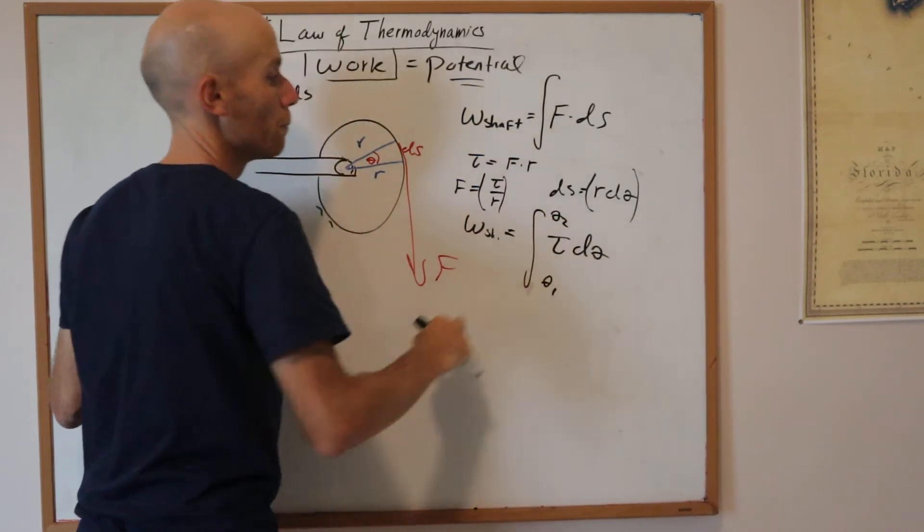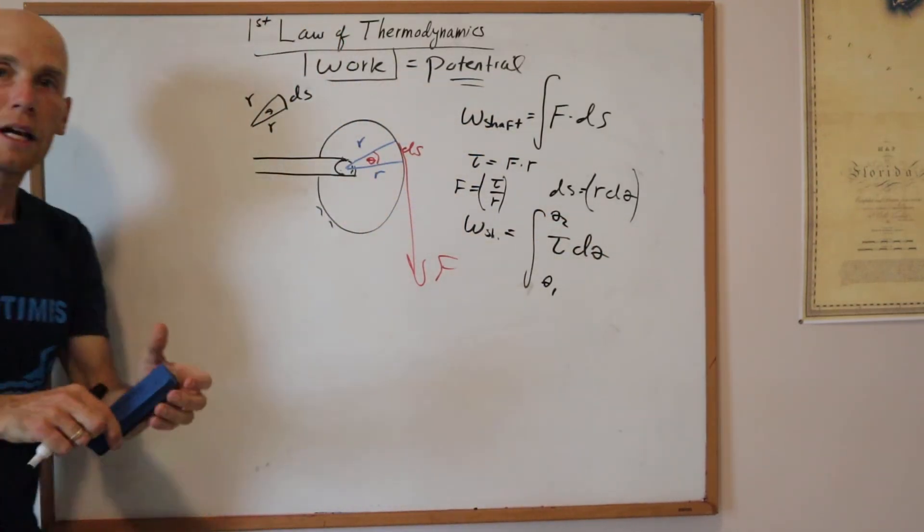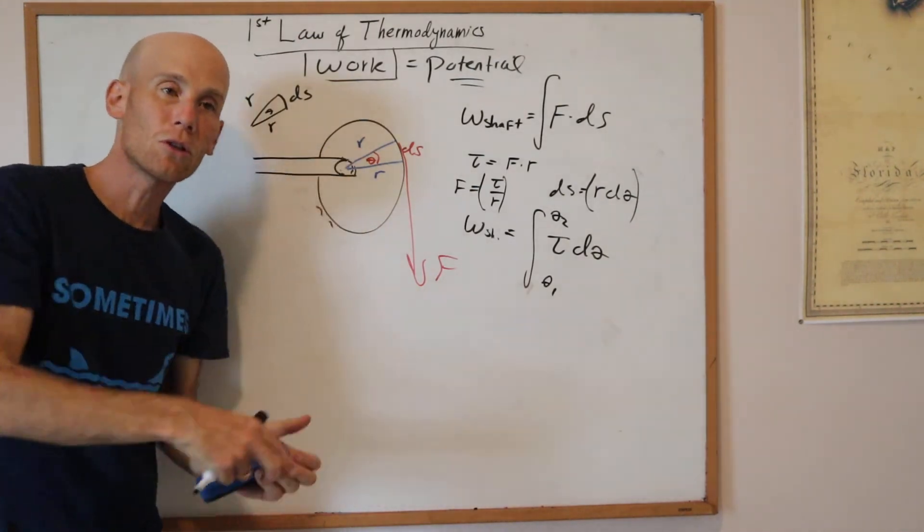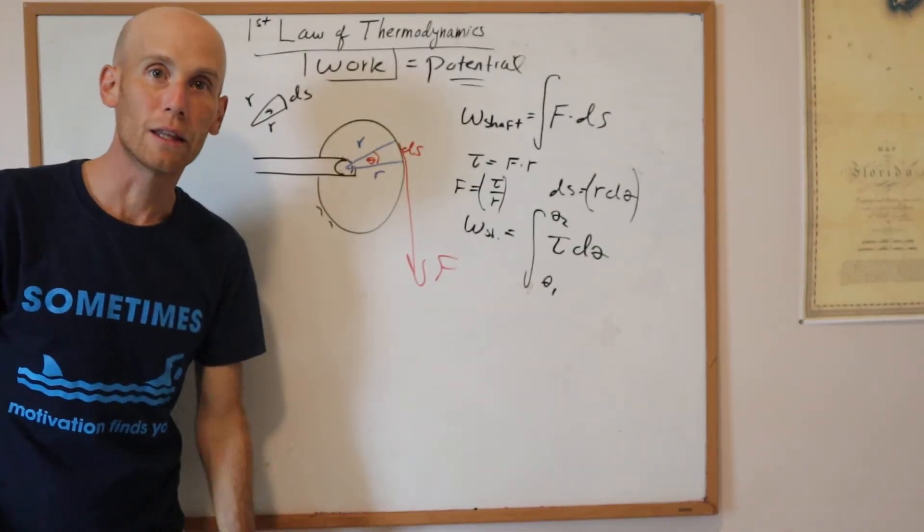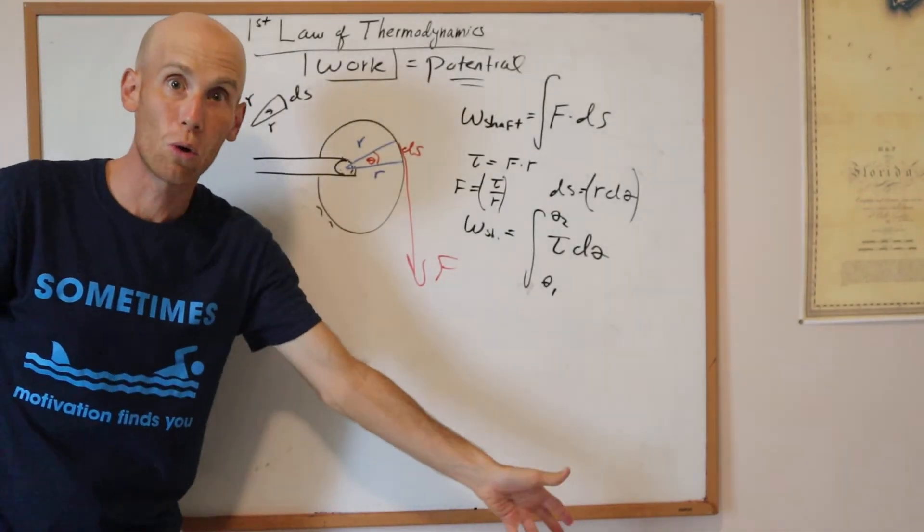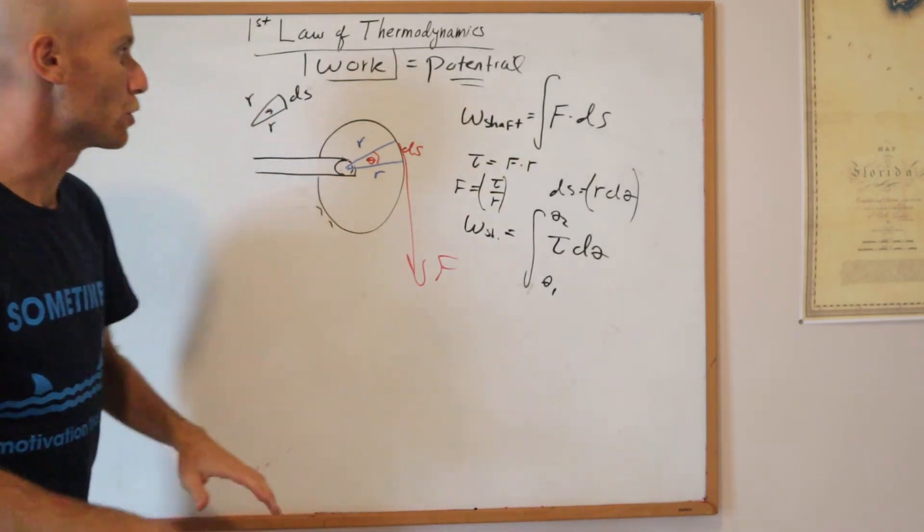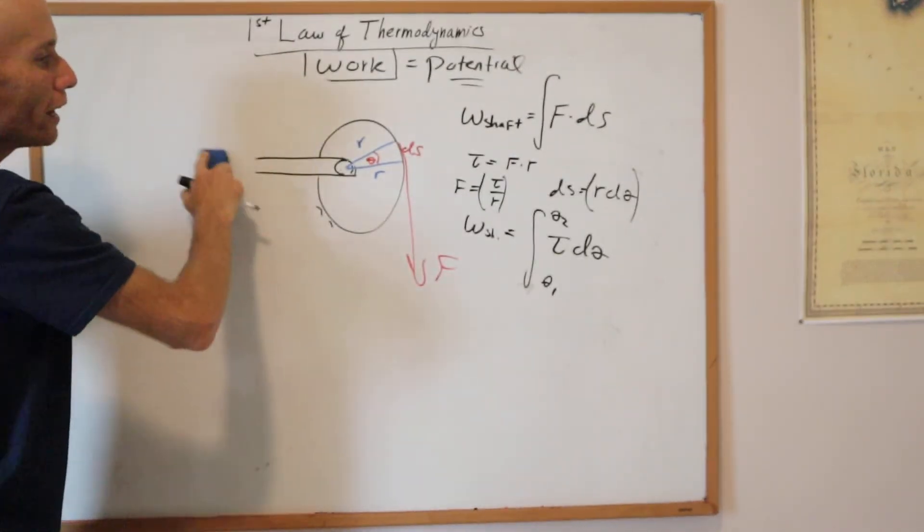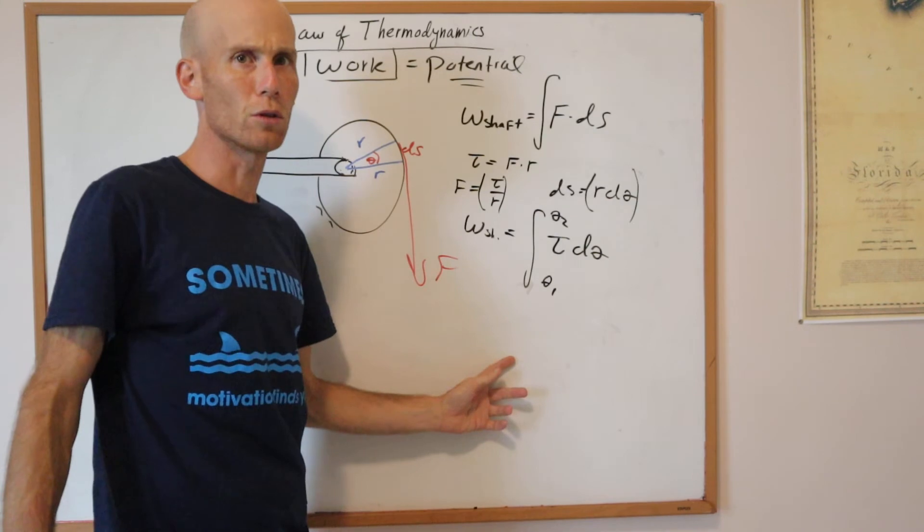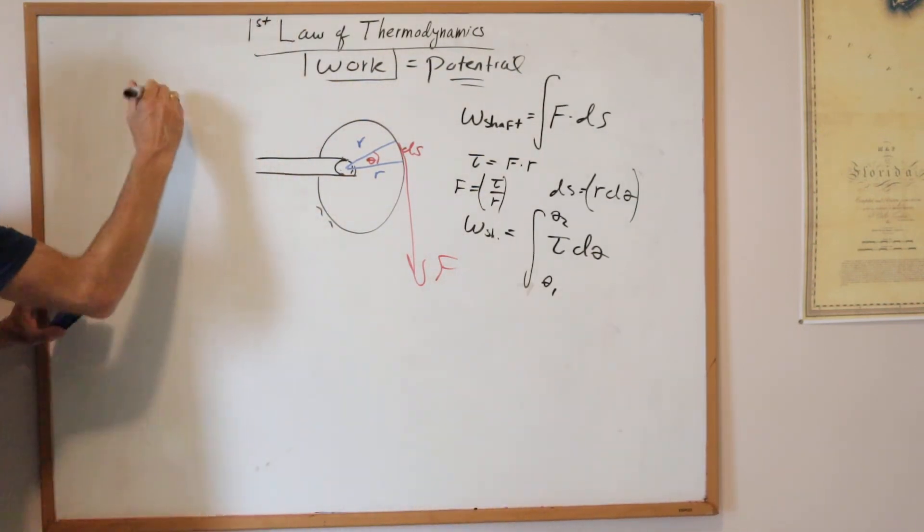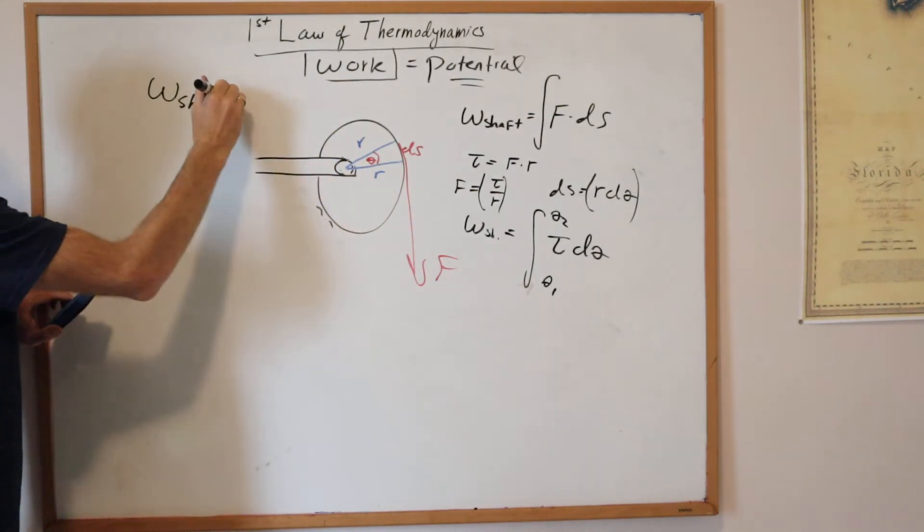Basically, the number of times I go around the circle tells me the amount of work that either I put into it or that it did for me. That's known as shaft work. I can evaluate that integral. If I say the tau is independent of theta, then it's just tau times theta.